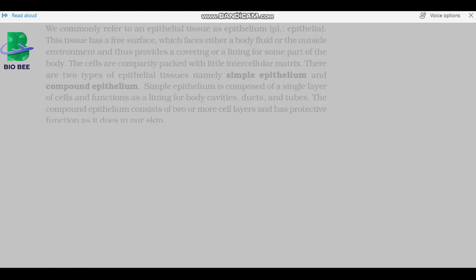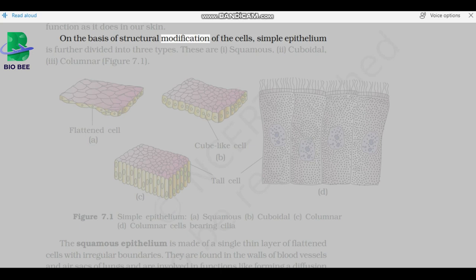There are two types of epithelial tissues, namely simple epithelium and compound epithelium. Simple epithelium is composed of a single layer of cells and functions as a lining for body cavities, ducts, and tubes. The compound epithelium consists of two or more cell layers and has protective function as it does in our skin.